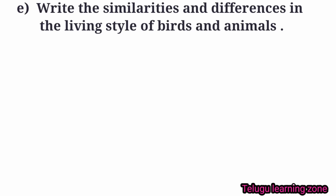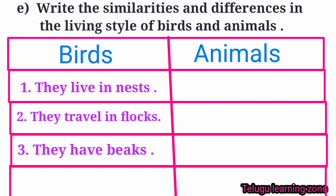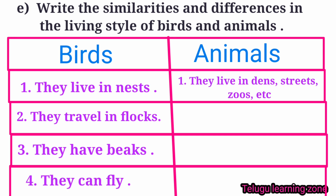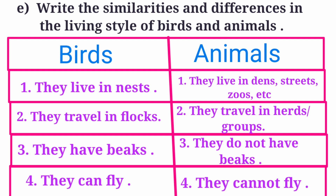Question E: Write the similarities and differences in the living style of birds and animals. Answer. Birds: They live in nests. They travel in flocks. They have beaks. They can fly. Animals: They live in dens, streets, zoos, etc. They travel in herds and groups. They do not have beaks. They cannot fly.